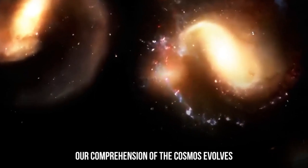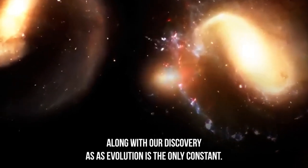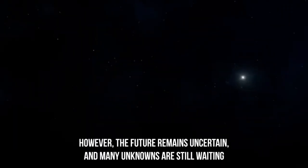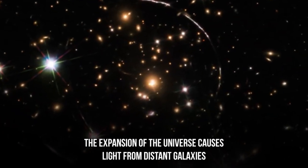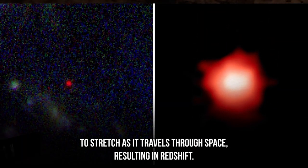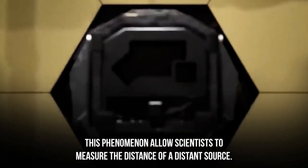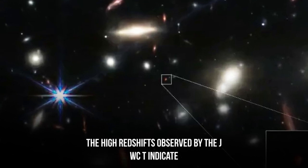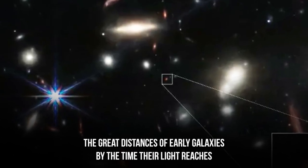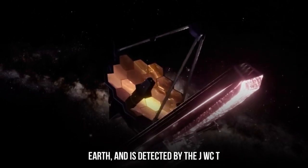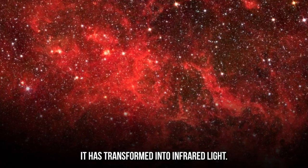Our comprehension of the cosmos evolves along with our discoveries, as evolution is the only constant. However, the future remains uncertain and many unknowns are still waiting to be unraveled. The expansion of the universe causes light from distant galaxies to stretch as it travels through space, resulting in redshift. This phenomenon allows scientists to measure the distance of a distant source. The high redshifts observed by the JWST indicate the great distances of early galaxies. By the time their light reaches Earth and is detected by the JWST, it has transformed into infrared light.